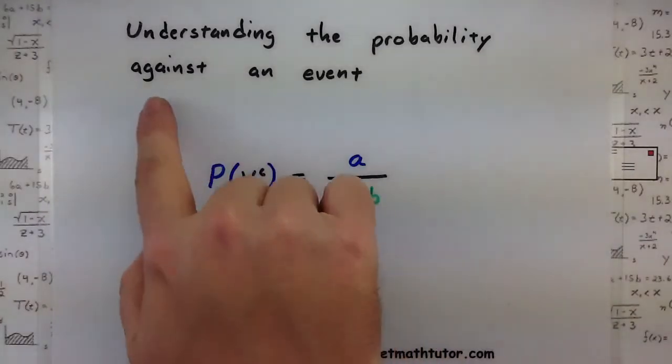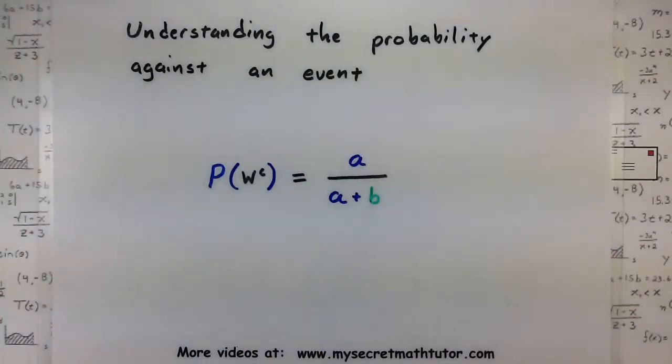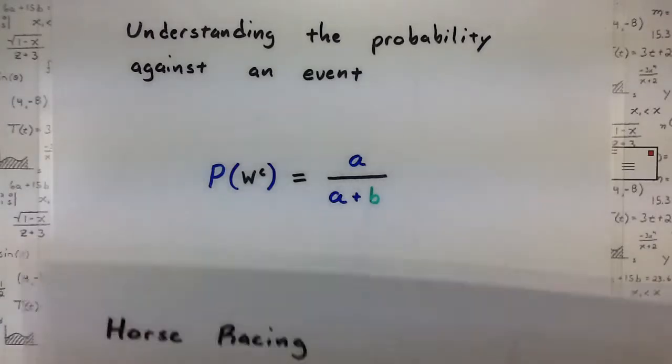and that is understanding the probability against an event. What I mean by against an event is essentially the probability of not winning. It turns out that these things are very common when you're looking at the odds for betting. So let's start to look at this a little bit more in depth.